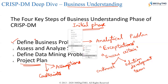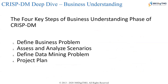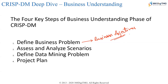Within business understanding, you have four sub-modules. The first is defining the business problem. In defining the business problem, you try to come up with business objectives — the objectives of the problem that you're trying to solve. You have to build a formal definition of your problem and get the business context of the problem to be solved.